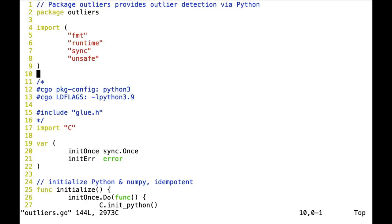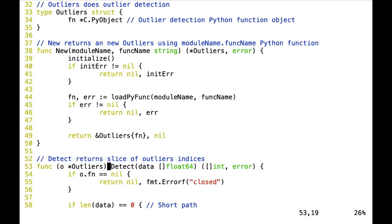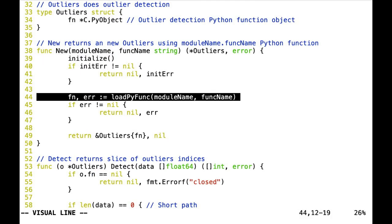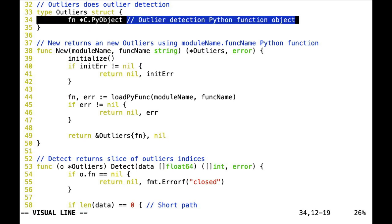So in outliers, we start with the new function. The new function first calls initialize to initialize Python and NumPy. And then it calls loadPyFunc, which is loading a Python function and saving it as a Go variable. And then we return this outlier. You can see here that fn is the field that is a Python object. Everything in CPython, including functions, is a pointer to a PyObject.